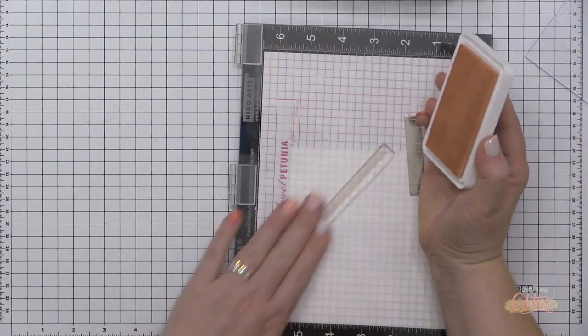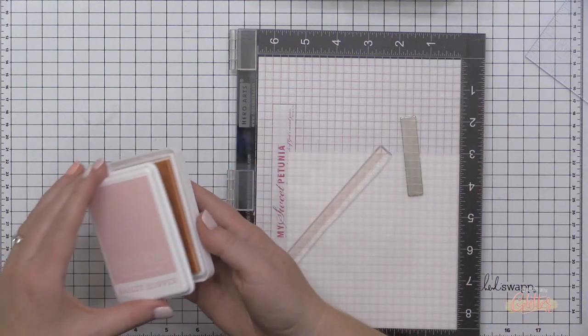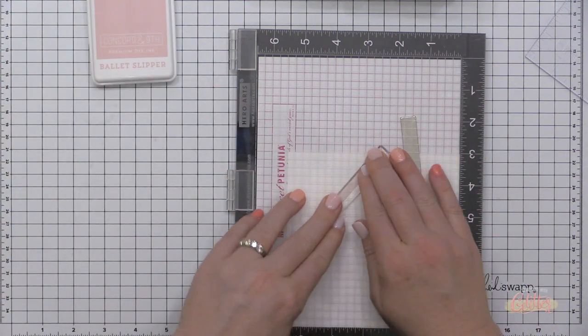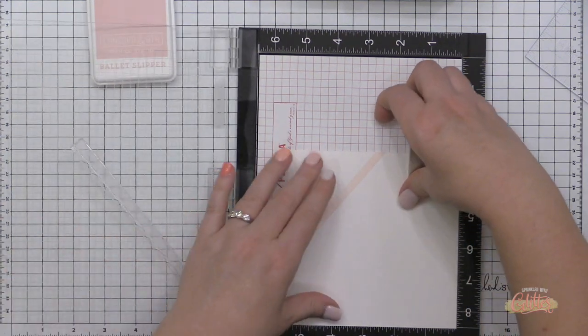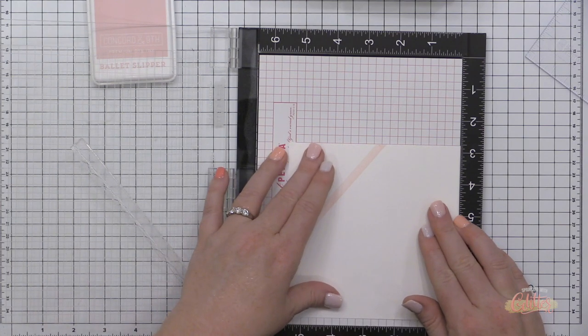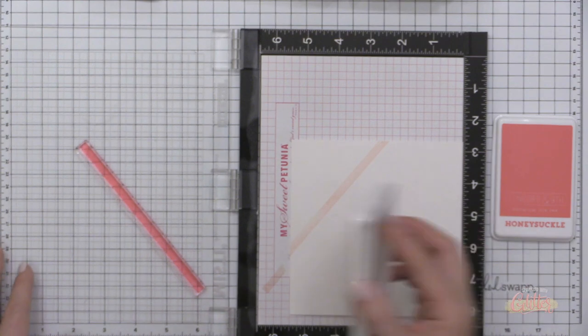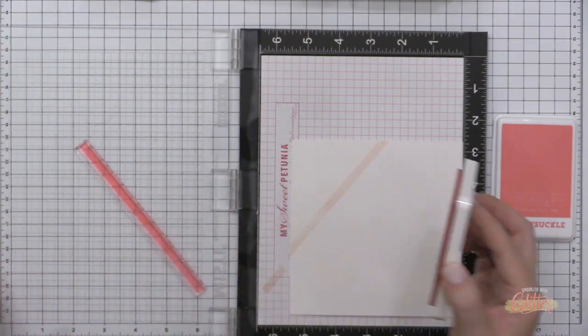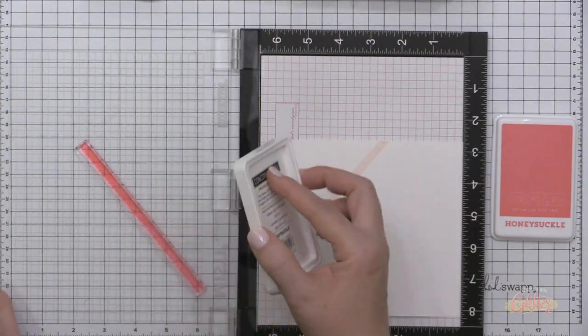I'm starting out with this stamp in my MISTI stamping tool and I'm going to work through the rainbow here. I'm starting with ballet slipper and I'm just stamping that onto my Concord & Ninth white cardstock. Then I'm going to play around with how much I need to move this. I'm just closing it and looking through the lid of my MISTI, and what I came up with was about one and a little bit more of the little grid lines.